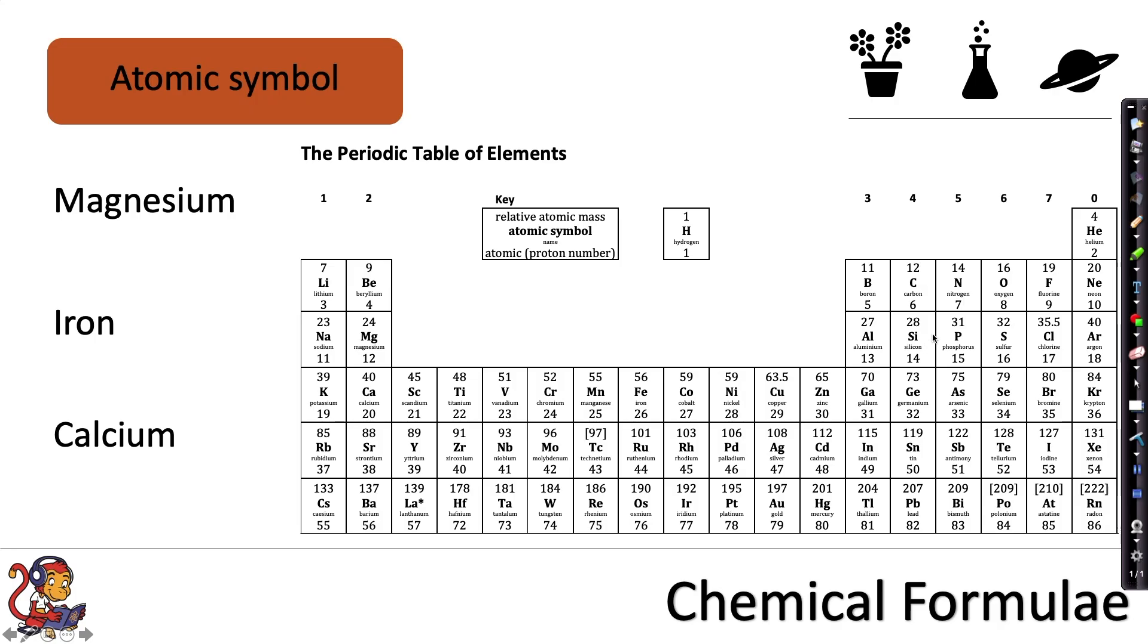Each element has its own atomic symbol that you will find on the periodic table. For example, magnesium has the symbol Mg. So when we're writing magnesium in equations we would write capital M, lowercase g.